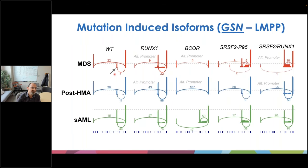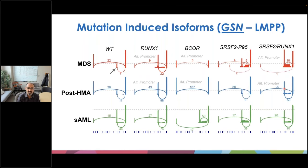Looking at another alternative promoter in GSEN, also in LMPPs: we see a specific increase in expression of this exon in RUNX1 cells in MDS and post-HMA, but a loss of this exon in BCOR samples at both time points. SRSF2 shows slight increase or no difference, but when RUNX1 is present, there's a dramatic increase in expression of the same exon at both time points. We think this opens exciting opportunity to understand the role of specific isoforms in specific clonal populations and how they individually contribute to disease and potentially identify cell-type-specific therapeutic targets.